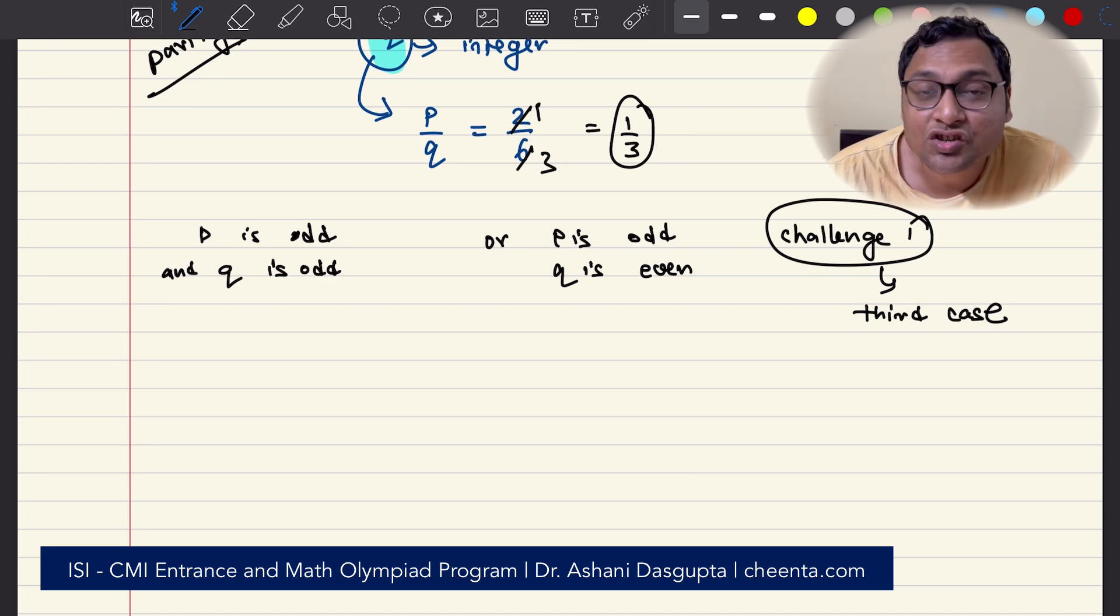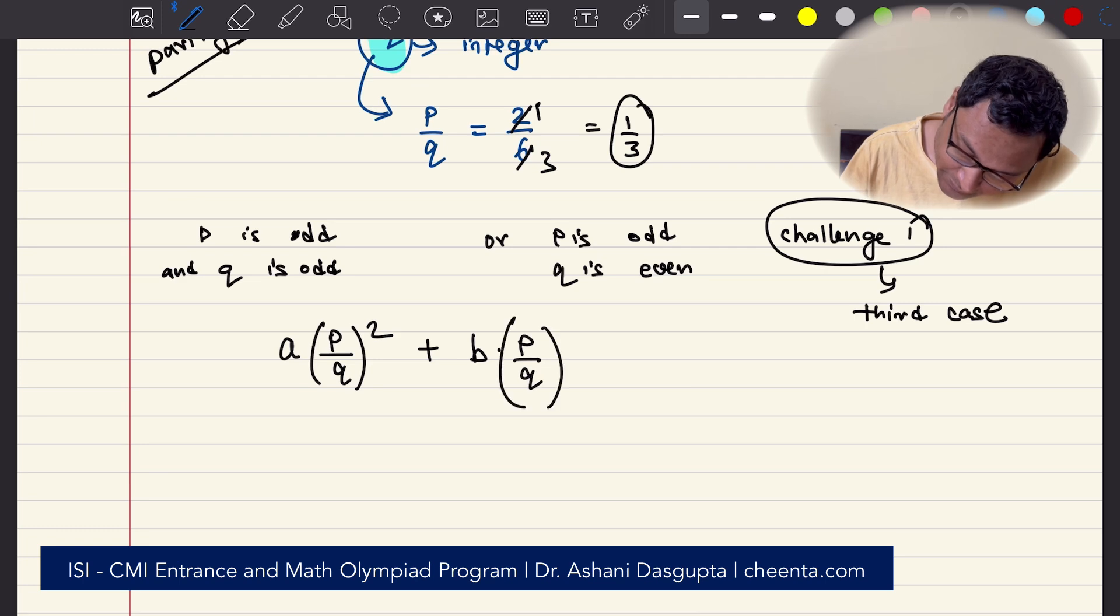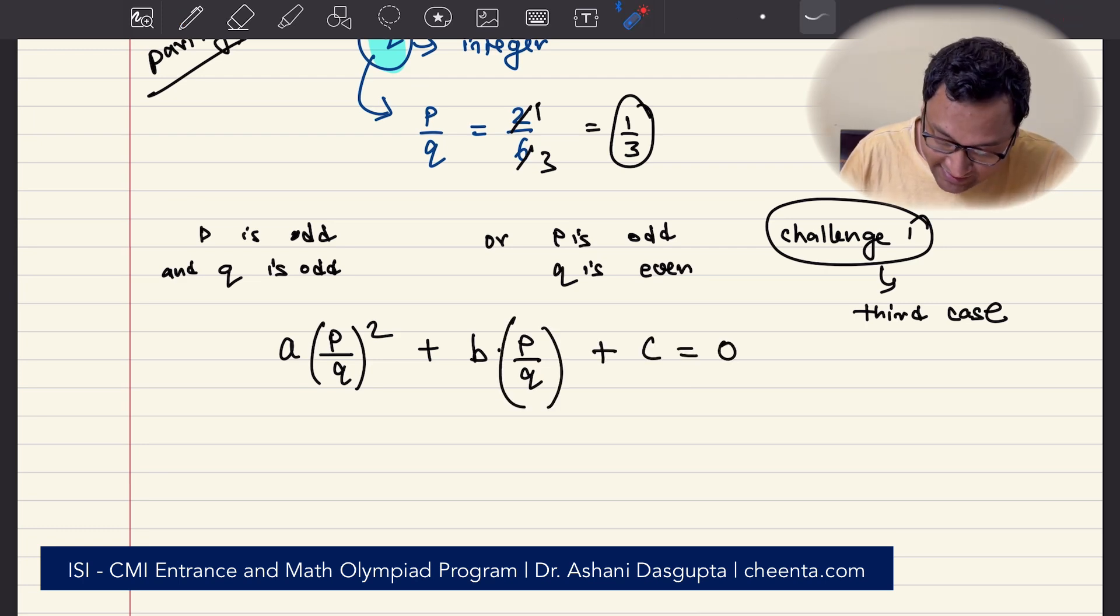Let's assume that P over Q is a solution, which means if I replace x by P over Q, it will satisfy. If I replace x by P over Q, it will satisfy.